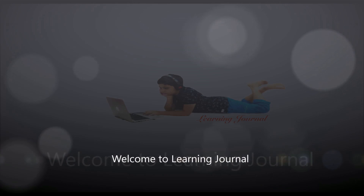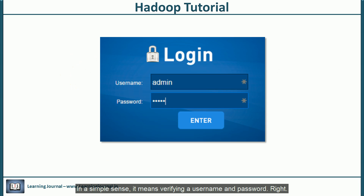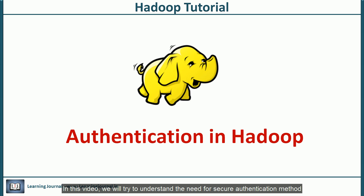Hello and welcome to Hadoop Tutorials at Learning Journal. Authentication is the first level of security for any system. It is all about validating the identity of a user or a process — in a simple sense, it means verifying a username and password. In this video, we will try to understand the need for a secure authentication method and its implementation in a Hadoop cluster.